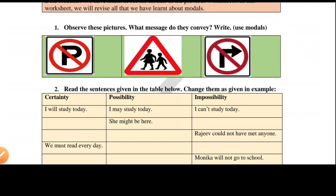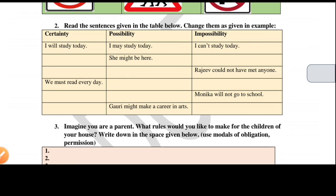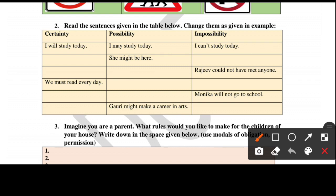I will show you exactly what to write. After that, the second task — we have been given some words and blanks with sentences. We have been given categories: certainty (something that will definitely happen), possibility (50-50 chances), and impossibility (something that cannot happen).